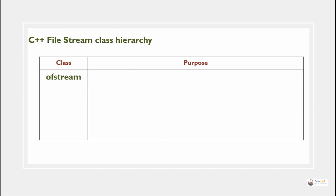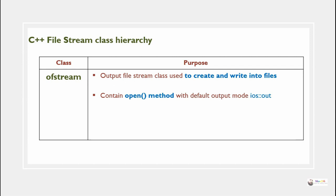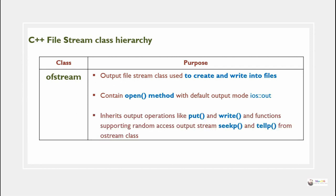ofstream is the output file stream class used to create and write into files. It contains an open method with default output mode ios::out. It inherits output operations like put and write, and functions supporting random access output stream such as seekp and tellp from the ostream class.